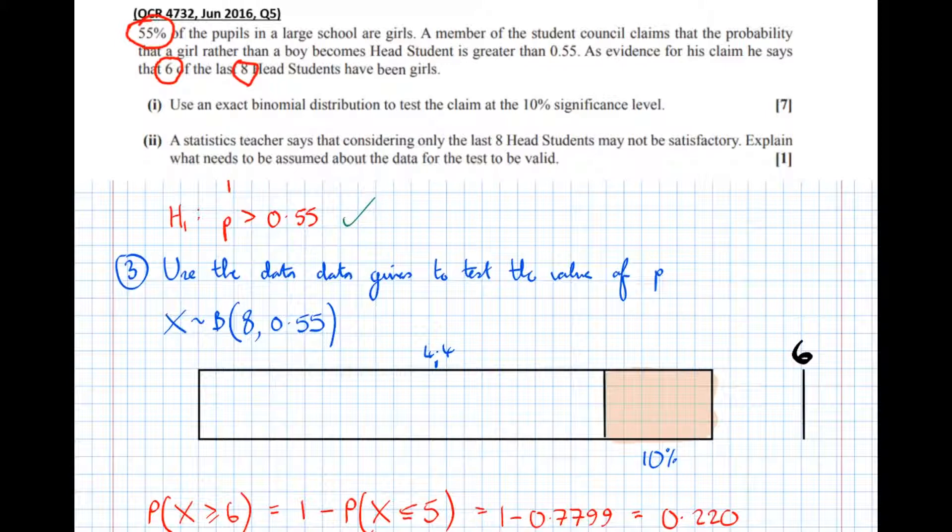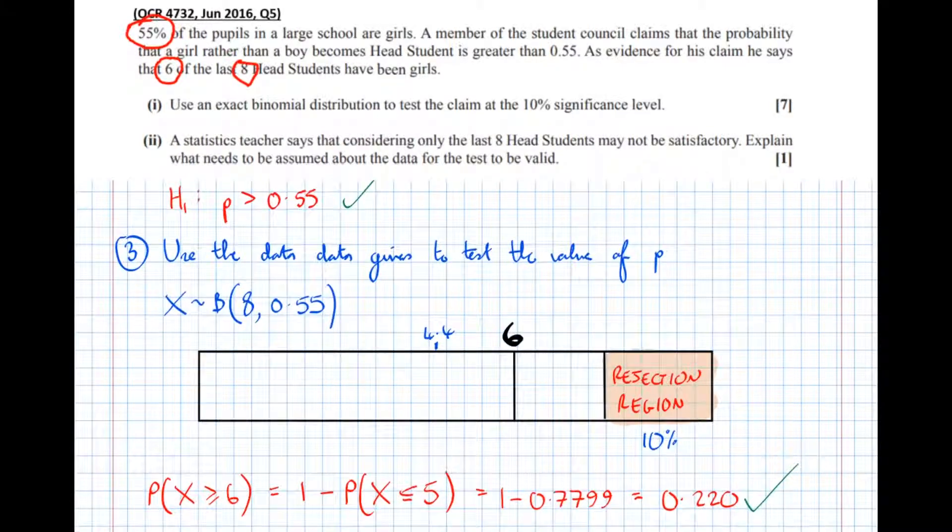0.220. So 0.220 of the probability lies to the right of six. That means on this sliding scale, six is well outside of the 10% region. It's actually, if 22% of the probability lies to the right of six, six has been pushed out of this region. Therefore, we're not going to reject it. So this here is the rejection region. And we can see, because 22% of the probability lies to the right of six, that it must have been pushed outside of this rejection region. By the way, this is a mark here for calculating that probability.